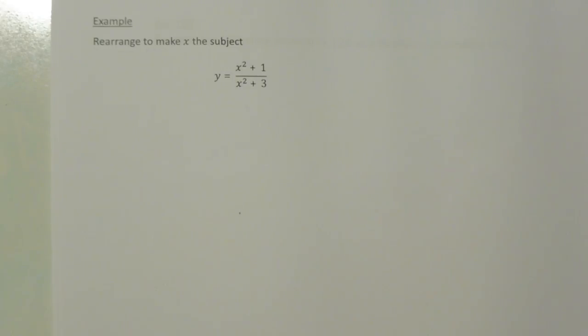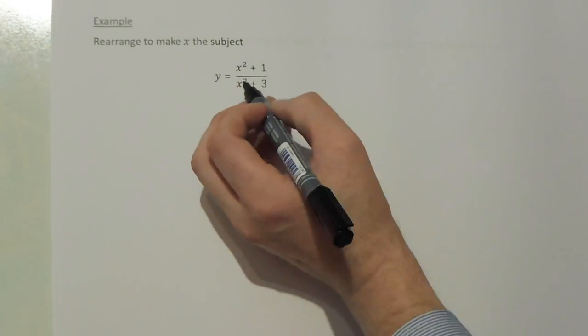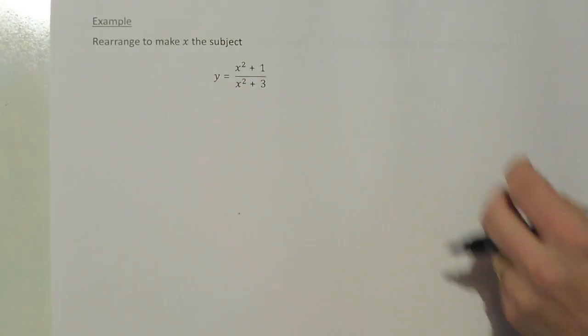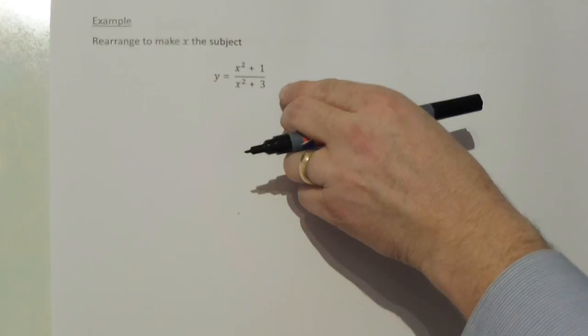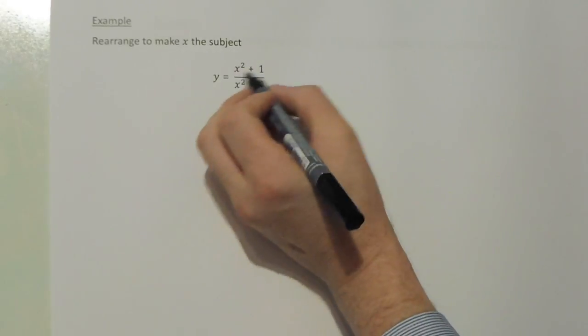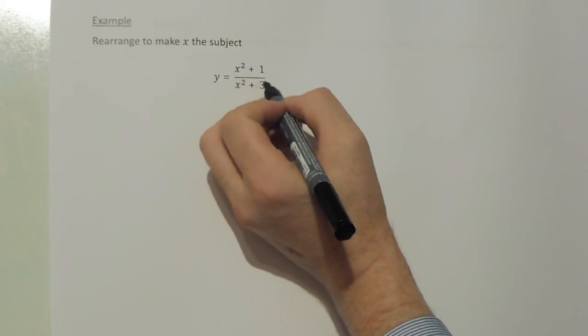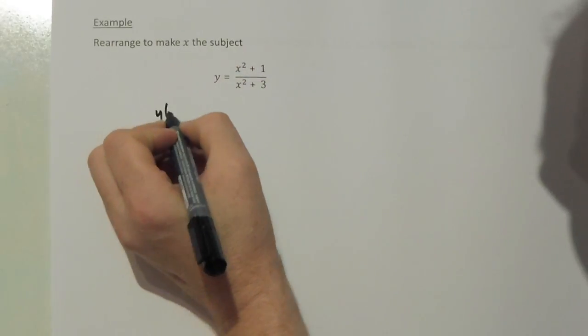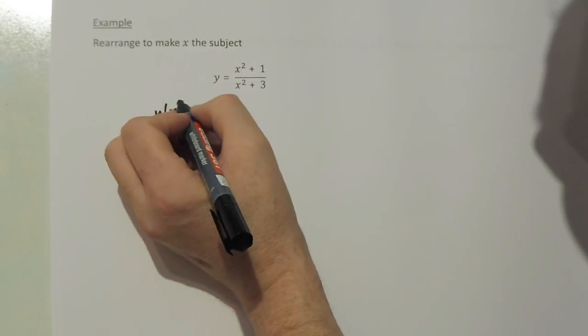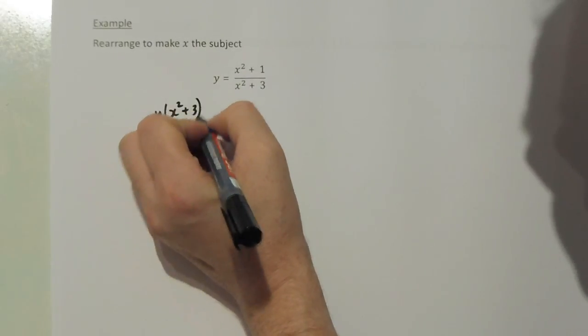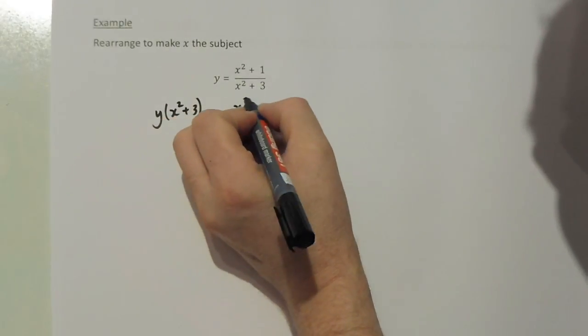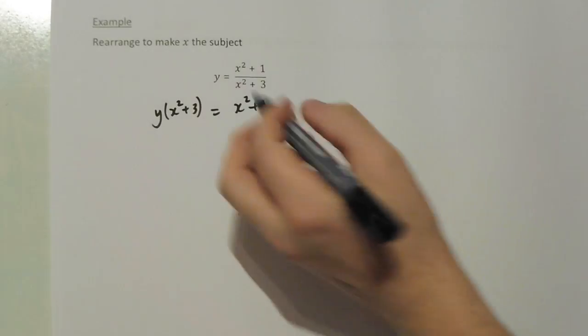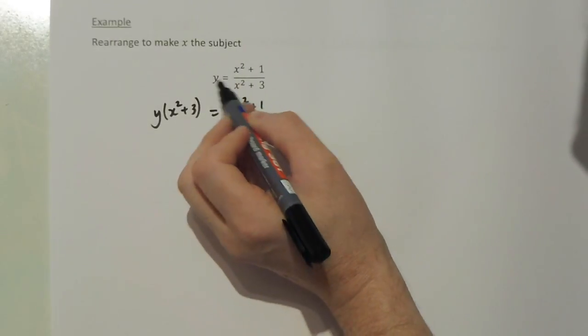This is one of our more complicated rearrangements. We have to make the letter x the subject, which we have mentioned twice in this setup. If we remove the fraction first of all by placing that denominator onto the other side, that becomes a multiplication. So y times x squared plus 3 is the same as x squared plus 1. That's removing the denominator onto the other side.